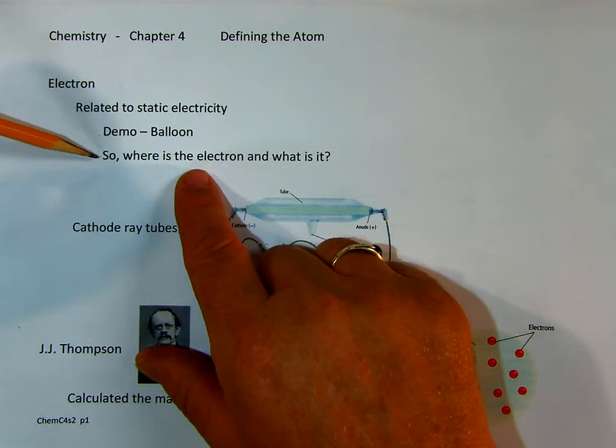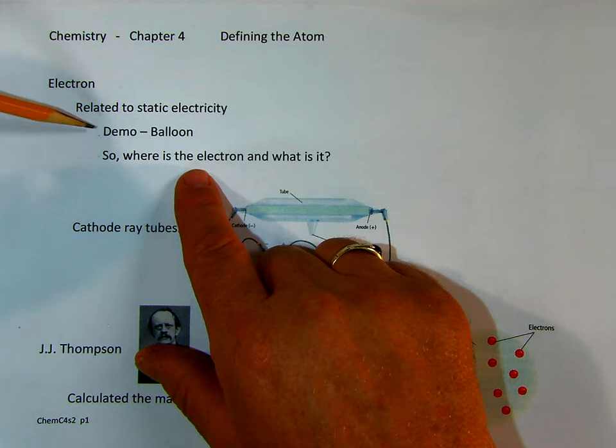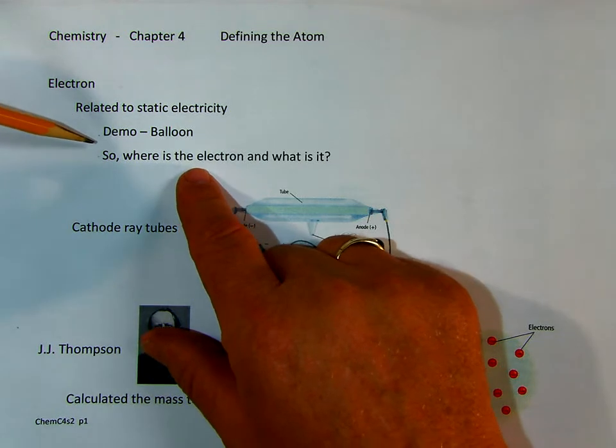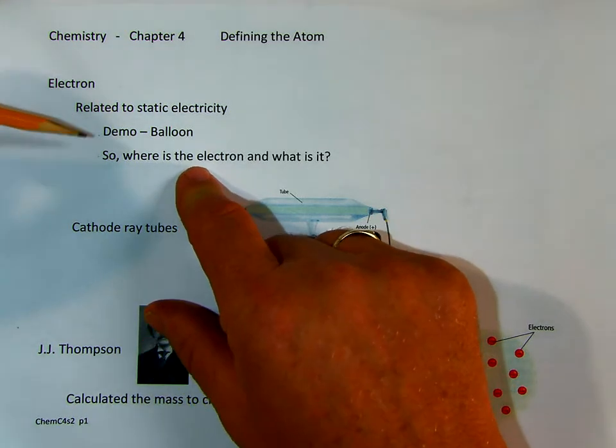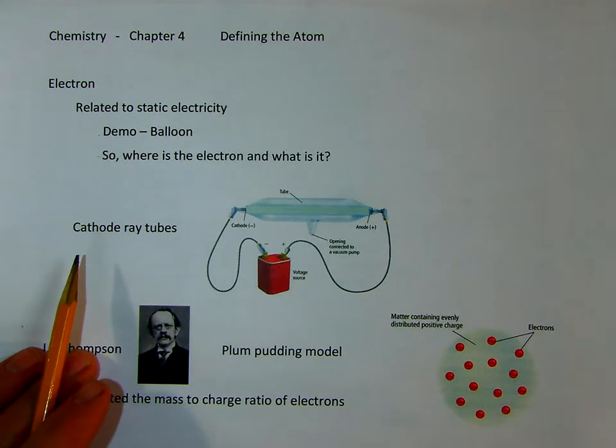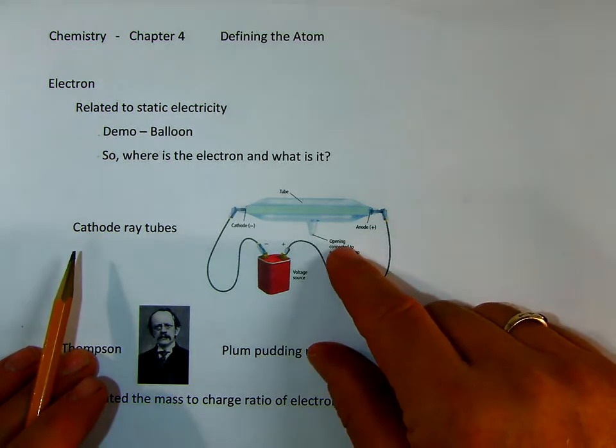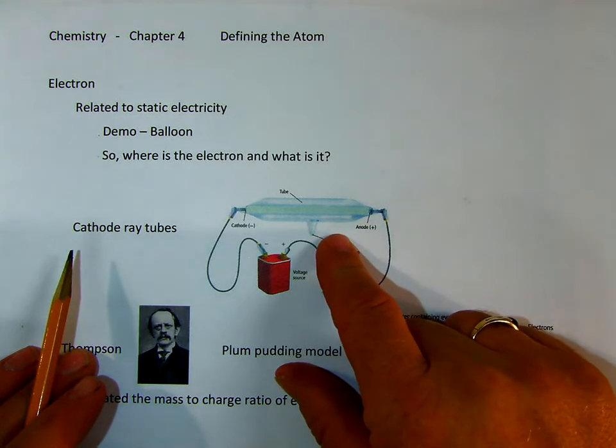So, where is the electron, and what is it? These kind of experiments really stumped scientists for many years. It was the invention of a cathode ray tube that kind of identified a little bit more about what they are.